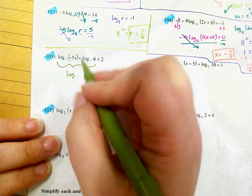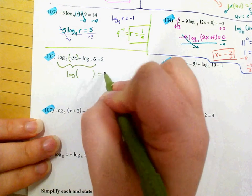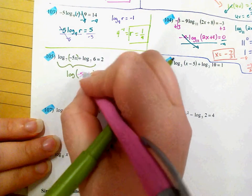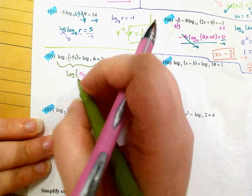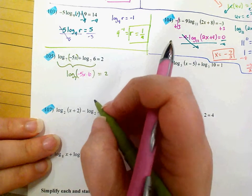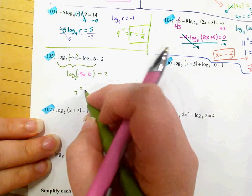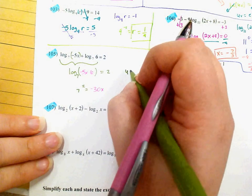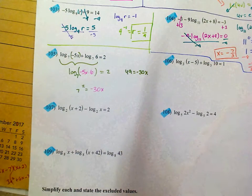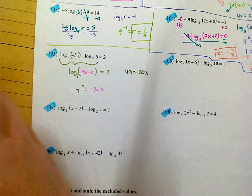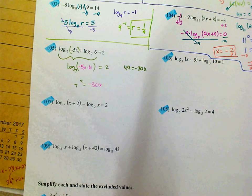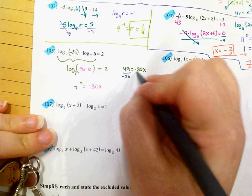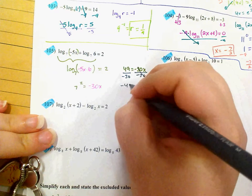On problem 105, I'm going to multiply negative 5x times 6, which is negative 30x. Converting to an exponential: 7 to the second equals negative 30x. 7 squared is 49, so 49 equals negative 30x. To solve for x, I just divide by negative 30, giving x equals negative 49 over 30.